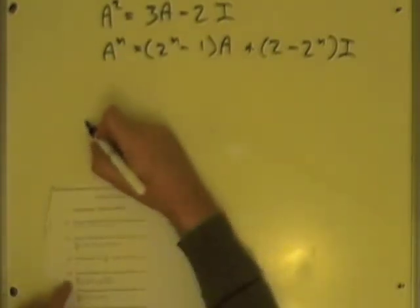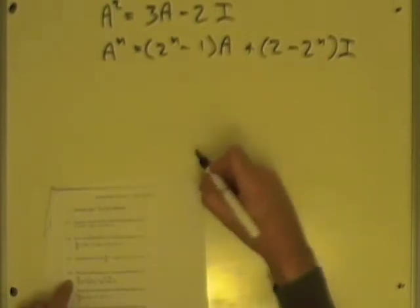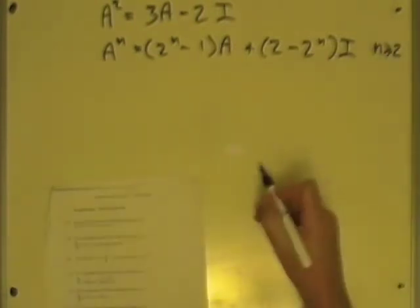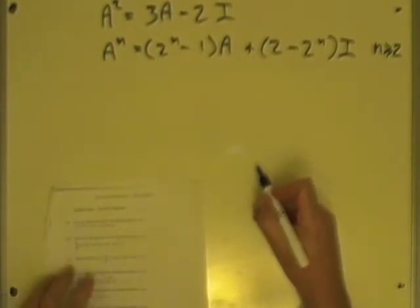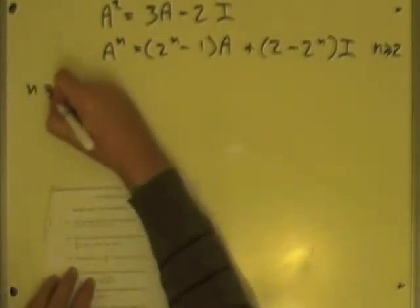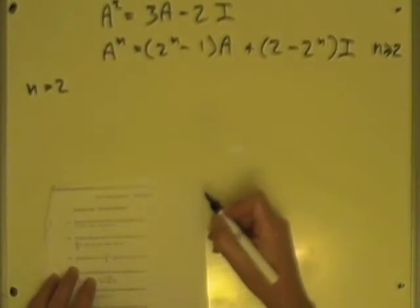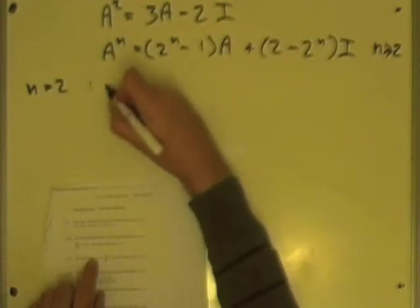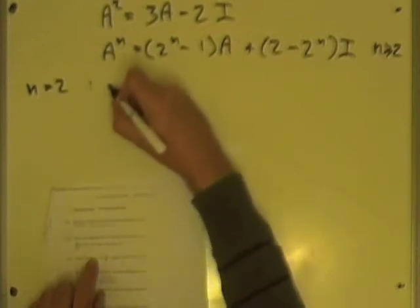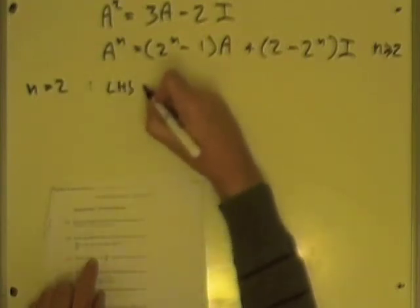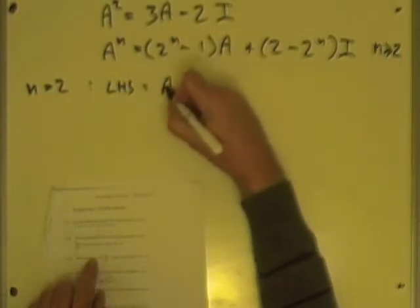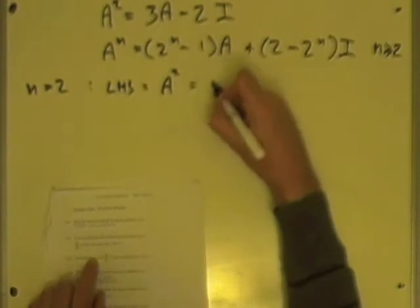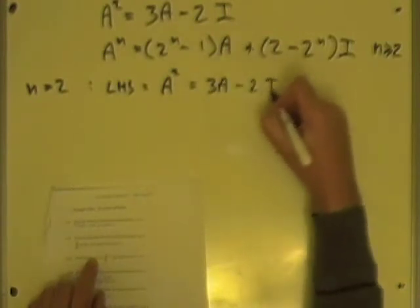Starting the same as before: consider whether it is true at the start. Except this time, we are considering n greater than or equal to 2. So at the start, consider n equals 2. Is it true when n equals 2? Well, from the left hand side, I have A to the power 2, which equals 3A minus 2I.